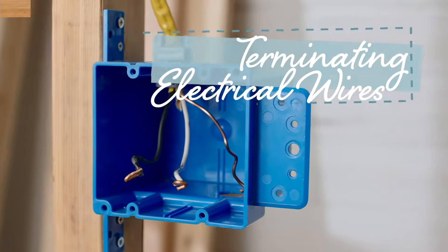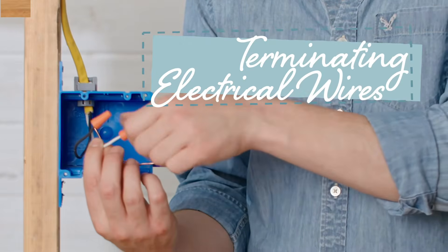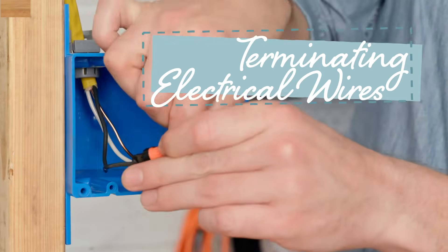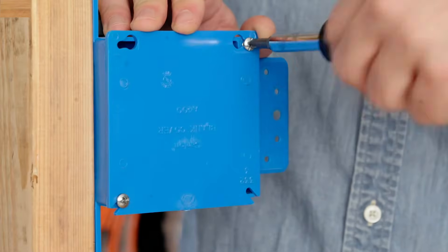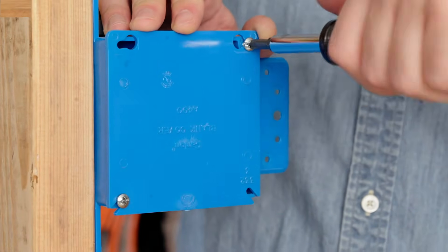In this demo we're going to show you how to terminate electrical wires that you're no longer using. The goal is to cap the ends with wire nuts and enclose the wire safely inside a junction box.